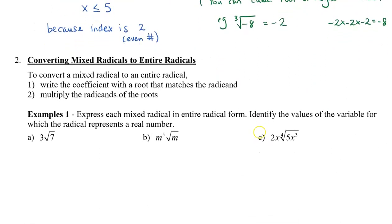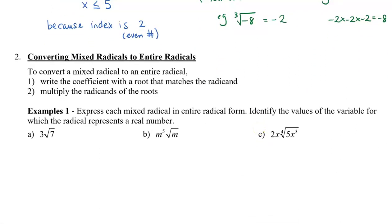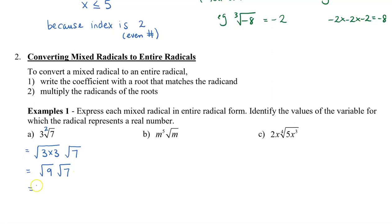Now let's take a look at how to convert mixed radicals to entire radicals. We're going to write the coefficient in the mixed radical with a root or an index that matches the radical and radicand that's already existing. In this example, we have 3 times root 7. The index here would be 2, so we want to write 3 also with a root of 2. That means this would be the same as the square root of 3 times 3, and then we write this times root 7. So 3 times 3 is 9, and then we still have root 7. Multiplying the two radicands together, we get root 63.